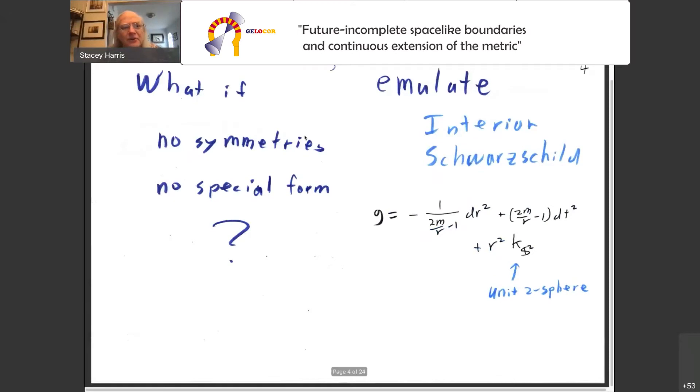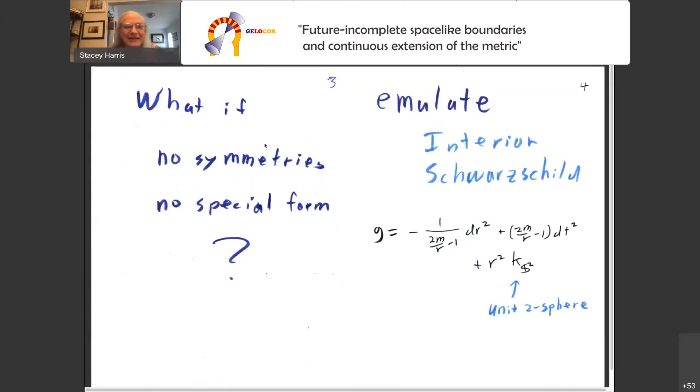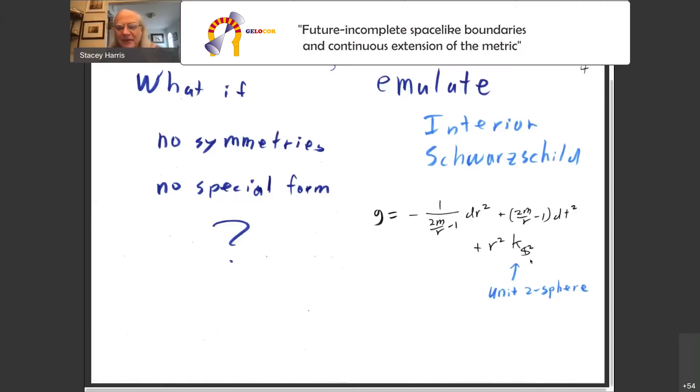But what if we don't have any symmetries and we do not assume any special form? What can we do in a far more general spacetime? Well, what I wanted to emulate is what happens in interior Schwarzschild. So just for fun, I've written down the Schwarzschild metric in the interior so that the r coordinate is the timelike one.